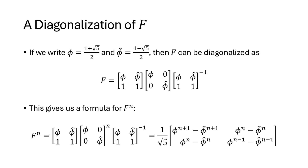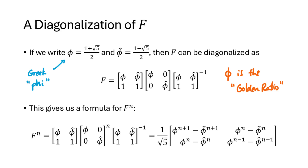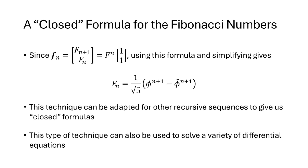The eigenvalues of F are (1 + √5)/2 and (1 − √5)/2. The first is often written as φ (phi), also called the golden ratio, approximately 1.618. Doing the same diagonalization process as in Example 1, we get a formula for F to the n, and multiplying by the starting vector [1,1] gives a closed formula for the nth Fibonacci number: (1/√5)(φ^{n+1} − φ̂^{n+1}). This technique can be adapted to find closed formulas for other recursive sequences and to solve certain differential equations.